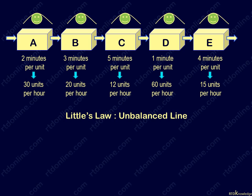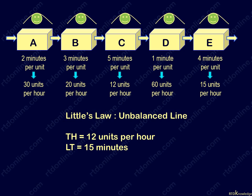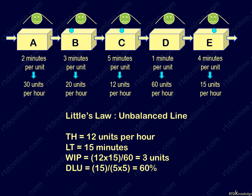Let's examine our original process, which is an unbalanced line, and find out its work in process. Here the throughput rate is 12 units per hour and lead time is 15 minutes, so its work in process equals 3 units. This means our 5 operators are working on just 3 units at any one time, and these 3 units would most of the time be in the 3 slowest workstations: B, C, and E.